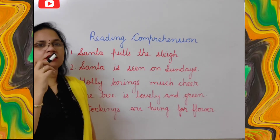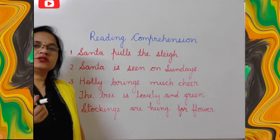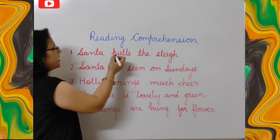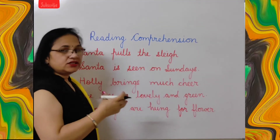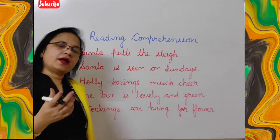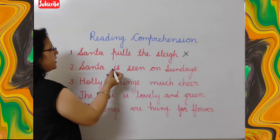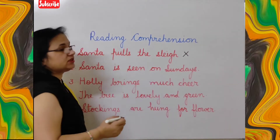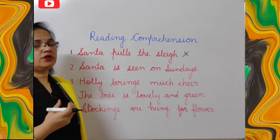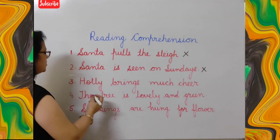Next is reading comprehension. Here you have to tick the correct statement and cross the wrong one. First: Santa pulls the sledge — no, Santa rides in it, so cross it. Santa is seen on Sundays — no, he comes only on Christmas Eve, so cross it.